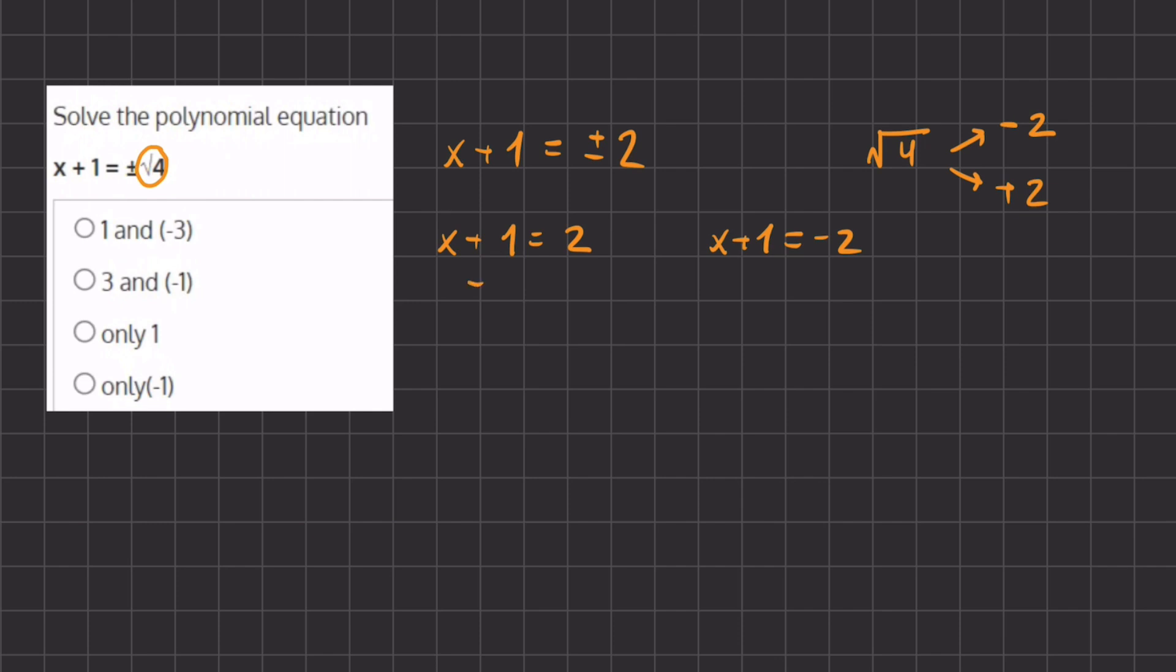So in order to solve for our first x, we're going to subtract 1 on both sides, and now we have x equals 2 minus 1, which is 1.